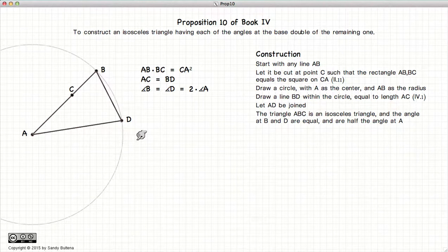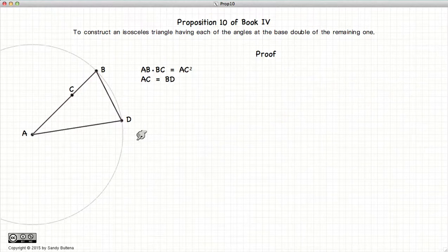And that is how we construct our special isosceles. Now to prove that it has the properties that we say it does, let's continue. So what I've done here is I've written the equations that are true because of the way that we've constructed our lines. So these do not have to be proven. They are there because of the way we constructed it. Remember we picked point C so that this equation holds true and we drew the line BD so that this equation is also true.